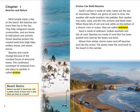In time, the weather will erode boulders into pebbles. Rain washes tiny rocks, sand, and dirt into streams and down rivers. When these bits of soil and rock settle on the bottom of a stream, river, or ocean, they are called sediment. Sand is made of sediment, broken seashells, and bits of coral. Beaches are made of sand that has been pushed onto land by the waves and wind. Waves from winter storms move sand off beaches and into the ocean. The waves move the sand back to the beach in the summer.